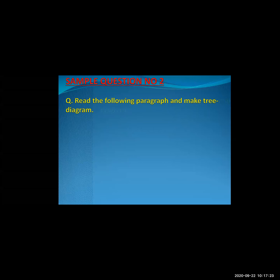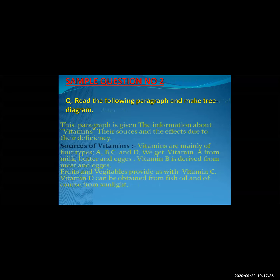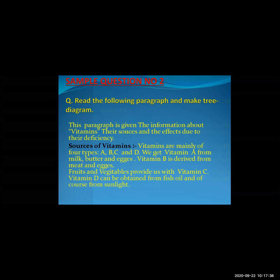Now there is a second sample question. The instruction is: read the following paragraph and make a tree diagram. This paragraph gives information about vitamins, their sources, and the effects due to their deficiency. Deficiency means shortage. Sources of vitamins — meaning the origins of vitamins.